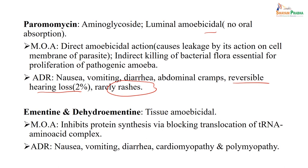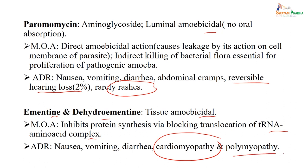Coming to drugs effective as tissue amoebicides — like emetine and dehydroemetine — these are tissue amoebicide drugs. How do they act? They inhibit protein synthesis via blocking of translocation of tRNA and amino acid complex, giving efficacy as tissue amoebicides. The most common adverse drug reactions are nausea, vomiting, diarrhea, but one has to be careful that it causes cardiomyopathy or polymyopathy. We have to monitor carefully to avoid cardiomyopathy and polymyopathy.